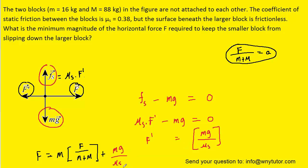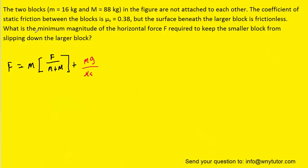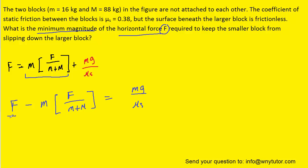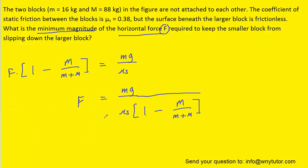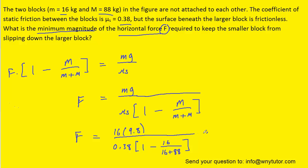After cleaning up the workspace, we recall the question asks for the minimum magnitude of horizontal force F required to keep the smaller block from slipping down the larger block. We substitute the expression for F prime into the x-direction Newton's second law equation and solve for F. Factoring F out of both terms on the left-hand side and dividing both sides by the bracketed term, we plug in the known values — lowercase m, uppercase M, g = 9.8, and the given coefficient of static friction — to get approximately 4.9 × 10² Newtons, which is the correct answer.